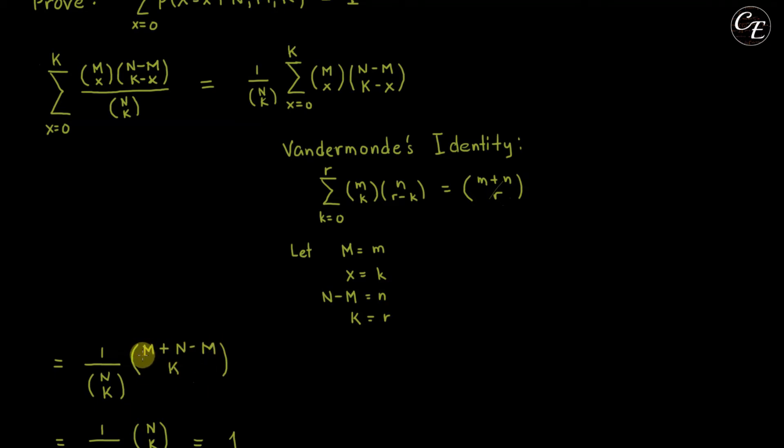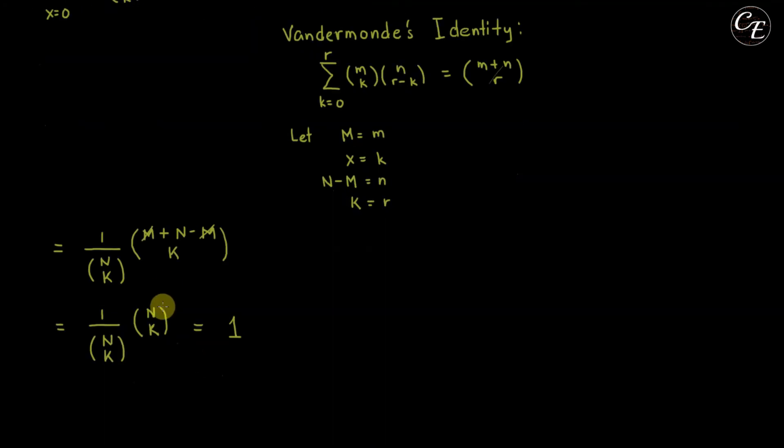Then m and minus m can be cancelled. Then we're left with n choose k for this one. Then n choose k over n choose k. We can cancel them out.